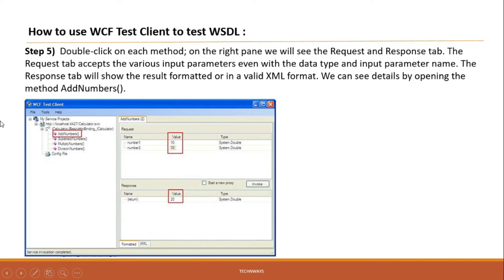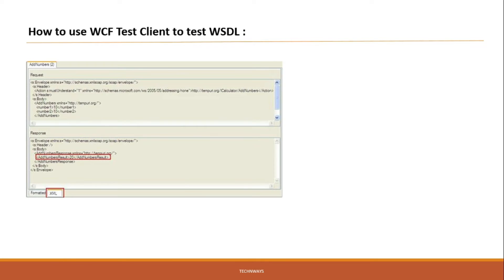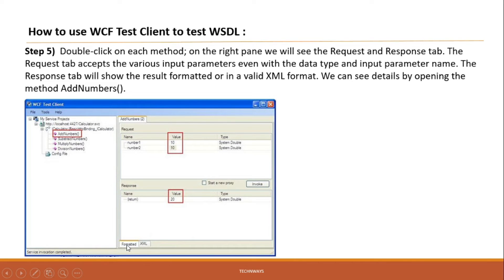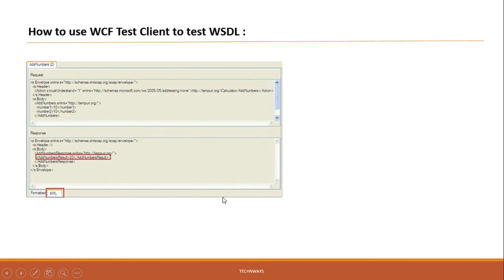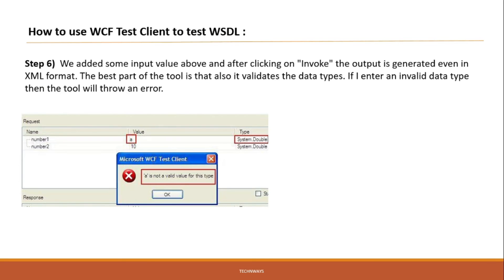Once you double-click on an operation like Add Number, the input parameters required by the service are displayed. You put in those input parameter values, and after clicking Submit, you get the output based on the logic written in the service — for example, a sum result of 20. The result appears below as a response. There are two view tabs: Formatted, which is a GUI view, and XML, which shows the actual XML being sent when invoking the service.